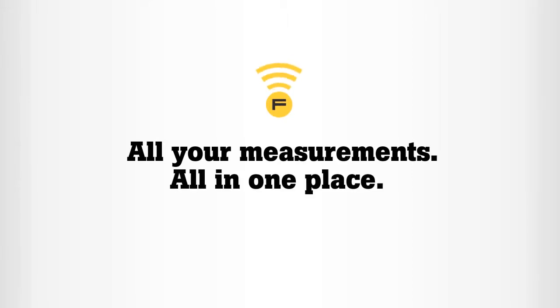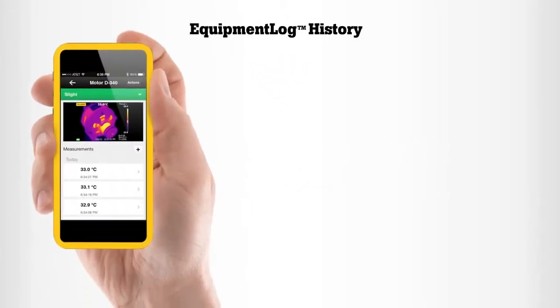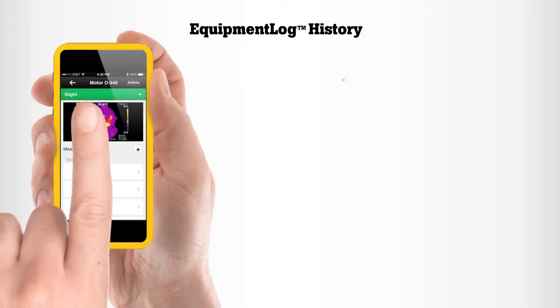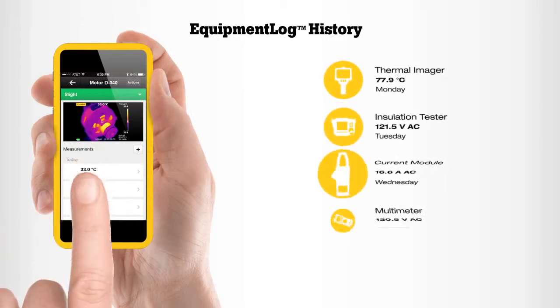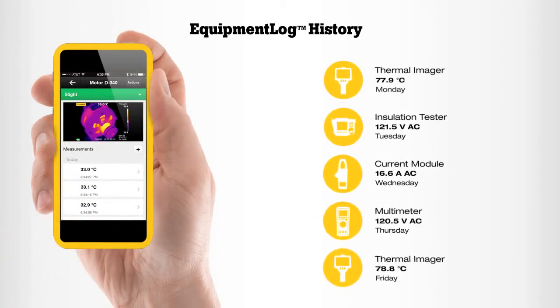Equipment log history allows you to assign those measurements to specific equipment, creating a history of test measurement data that will help you make decisions and identify issues.